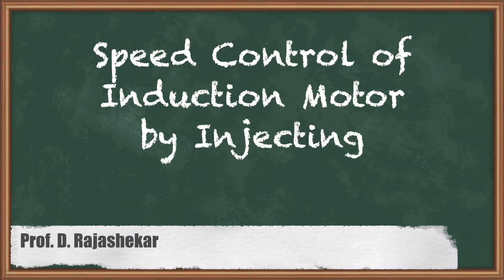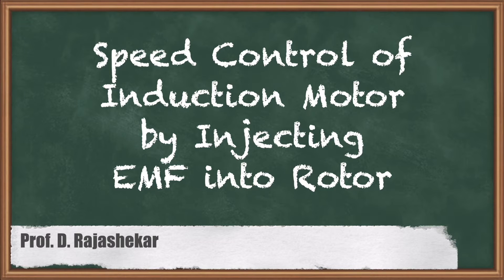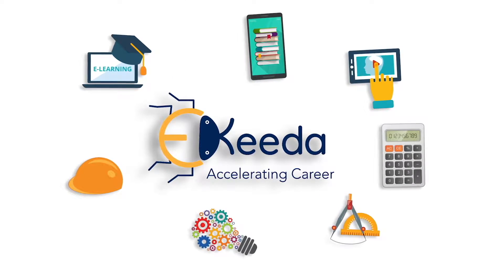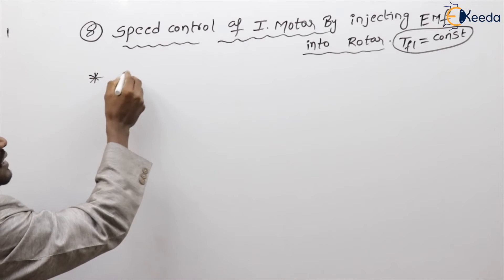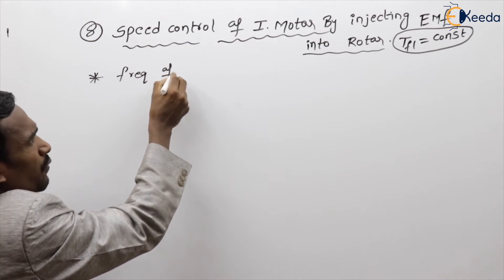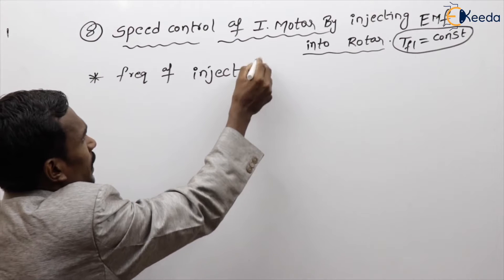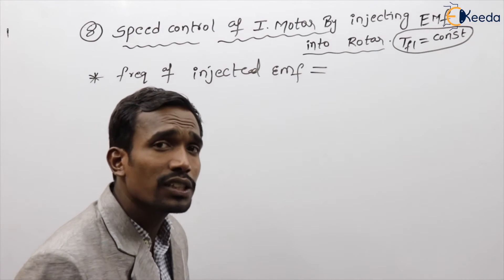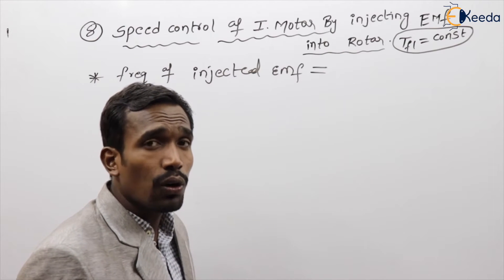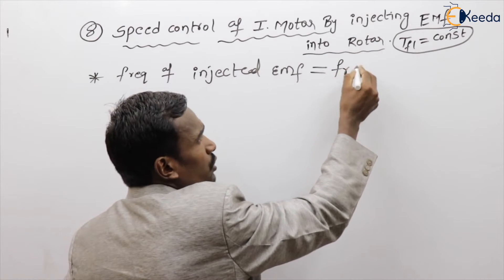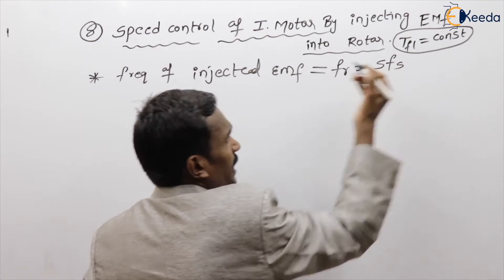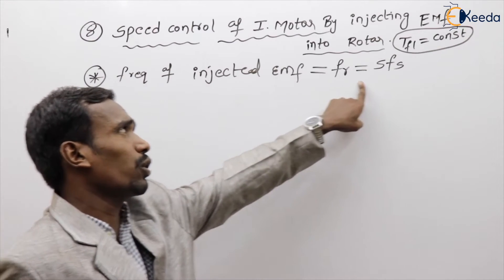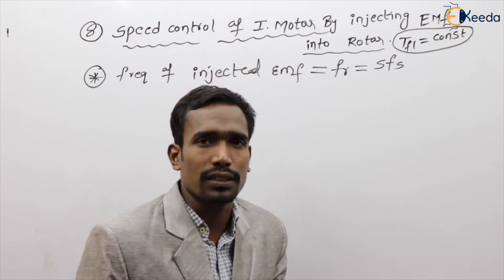In this video we are going to discuss about speed control of induction motor by injecting EMF into the rotor. The frequency of the injected EMF must and should be equal to the rotor frequency, which is nothing but slip times the stator frequency.